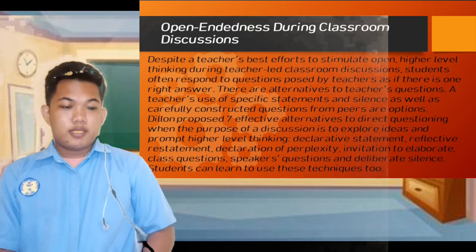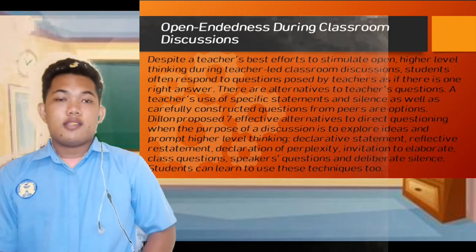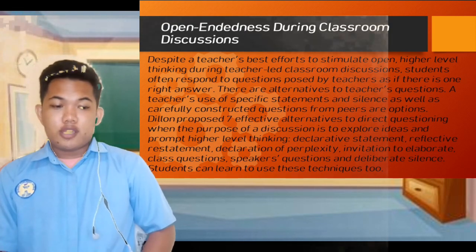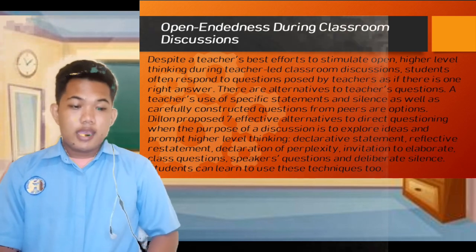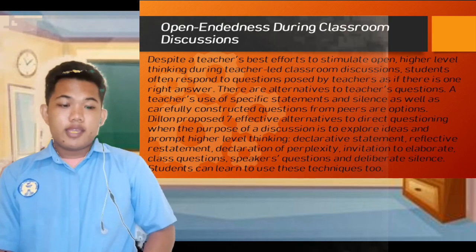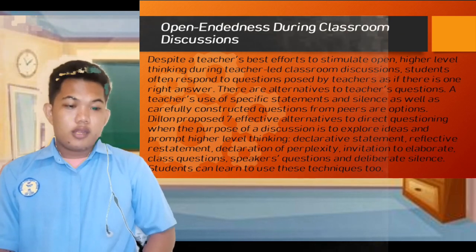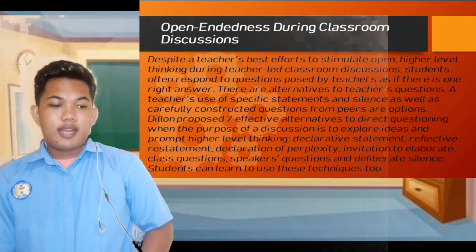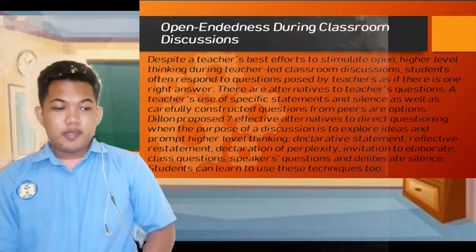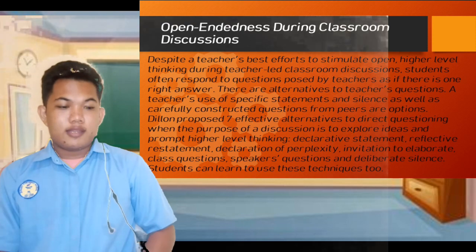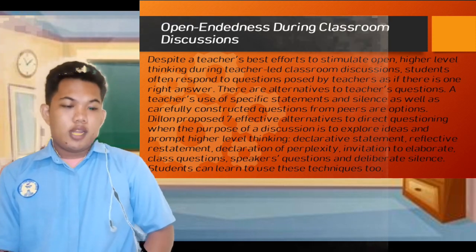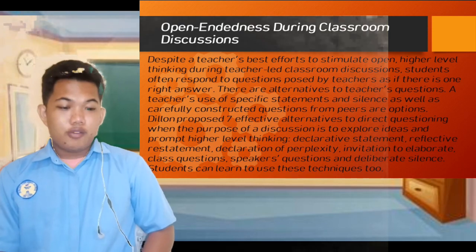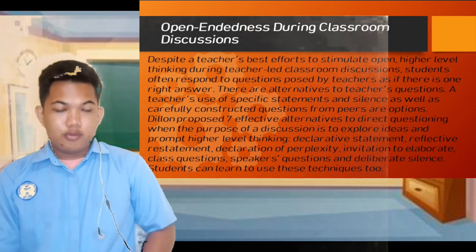The seven alternatives are: number one, declarative statement; number two, reflective statement; number three, declaration of perplexity; number four, invitation to elaborate; number five, class question; number six, speaker's question; and number seven, deliberate silence. Students can learn to use these techniques too.